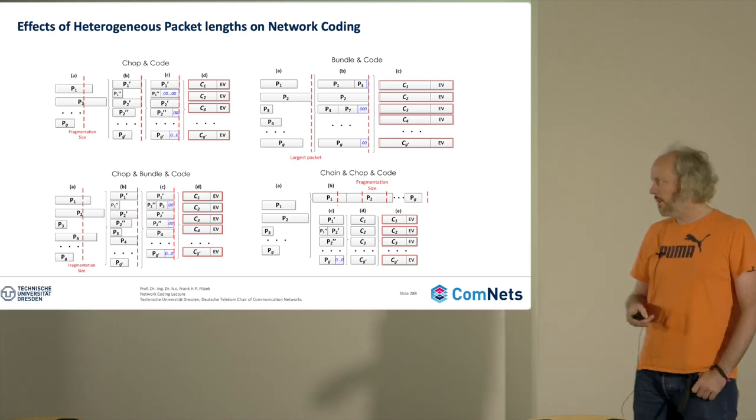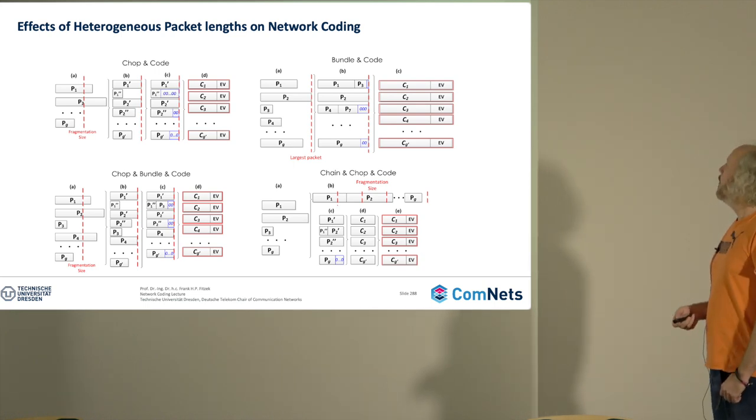There are different options that our students looked into. For example, you could say chop and coat, which means you have a fragmentation size and you just go down and cut the bigger packets into smaller pieces. So p1, for example, has two parts p1 dash and p1 double dash, and then still there's something missing, but now you only do the padding for that.